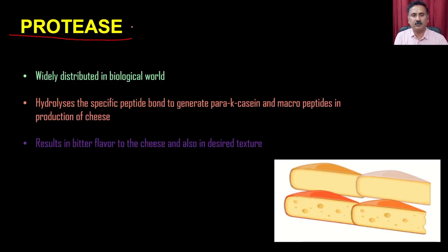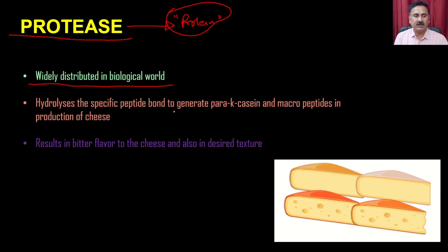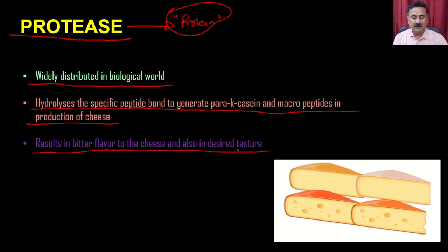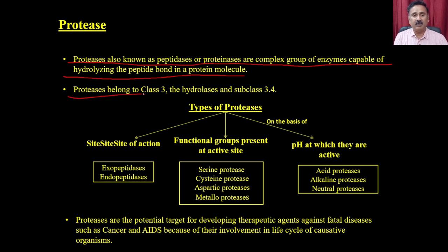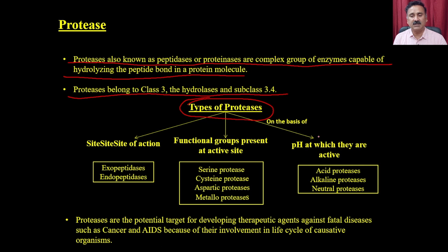The fourth enzyme is protease, required for degradation of protein. Enzymes that degrade proteins are called proteases. They are widely distributed in the biological world and hydrolyze specific peptide bonds to generate parakappa-casein and macropeptide in the production of cheese, resulting in a bitter flavor and desired texture. Proteases, also known as proteinases, are a complex group of enzymes capable of hydrolyzing the peptide bond in a protein molecule. Proteases belong to class III (hydrolases), subclass III.4.